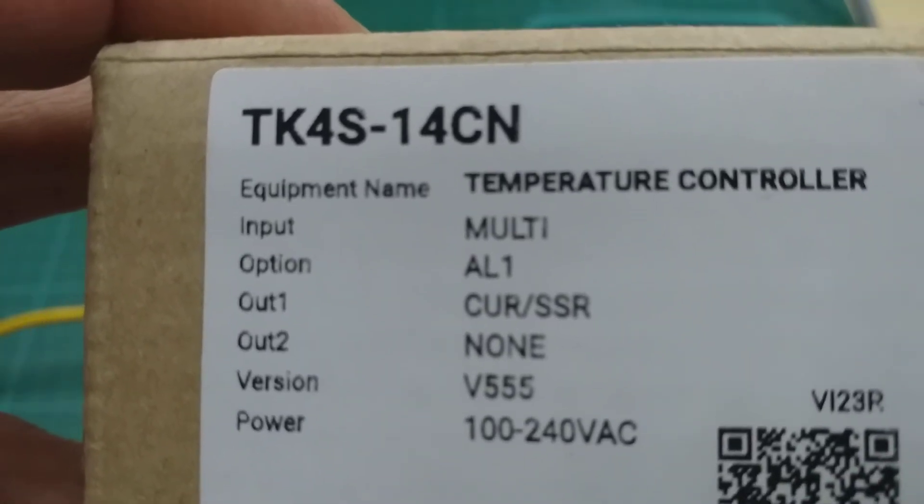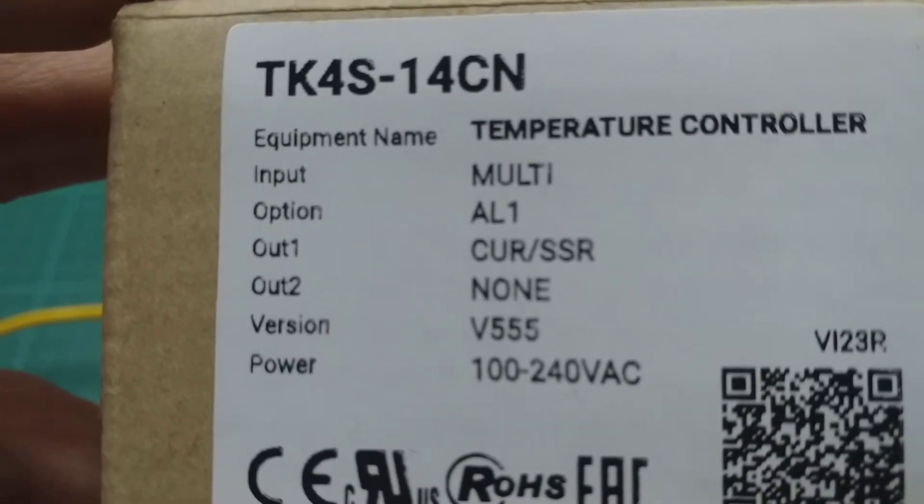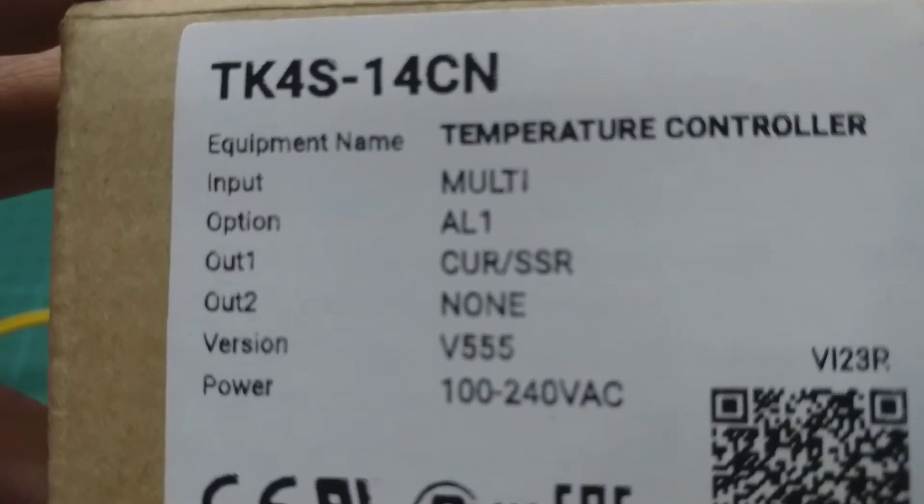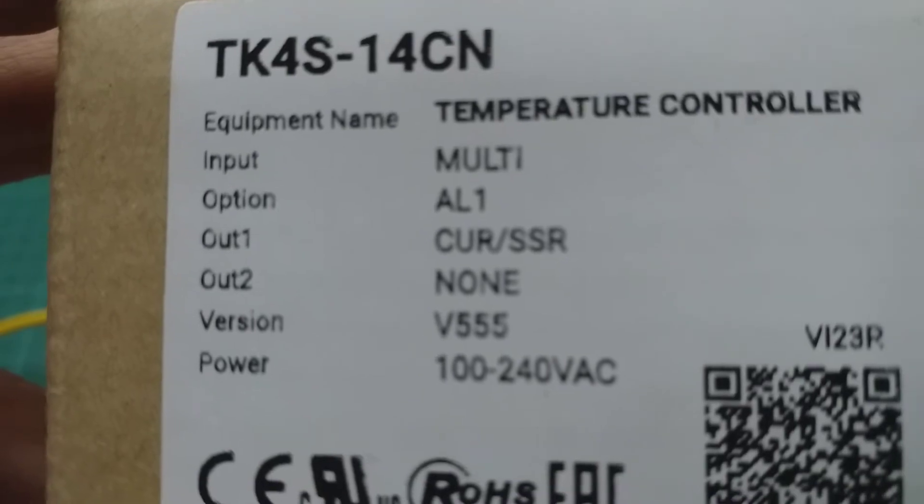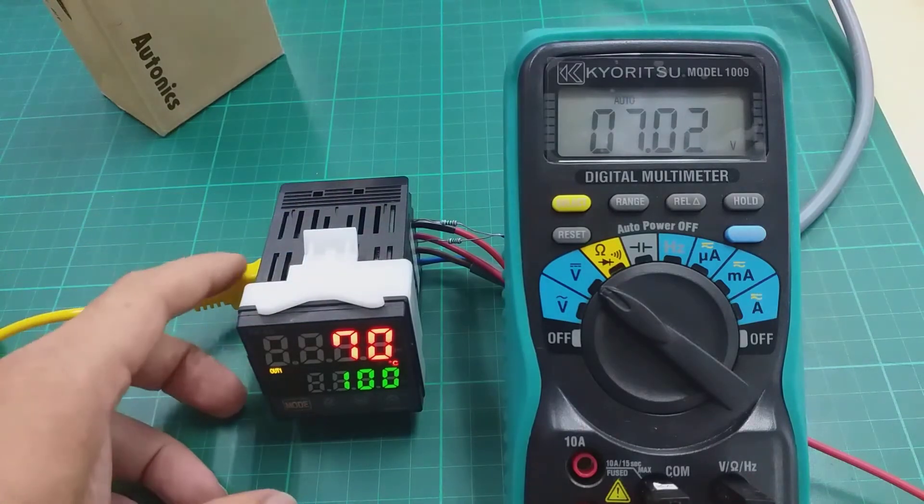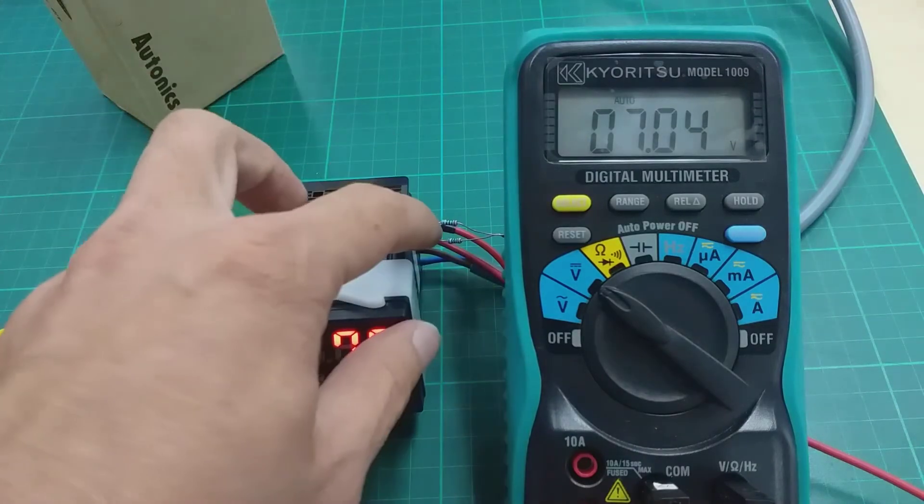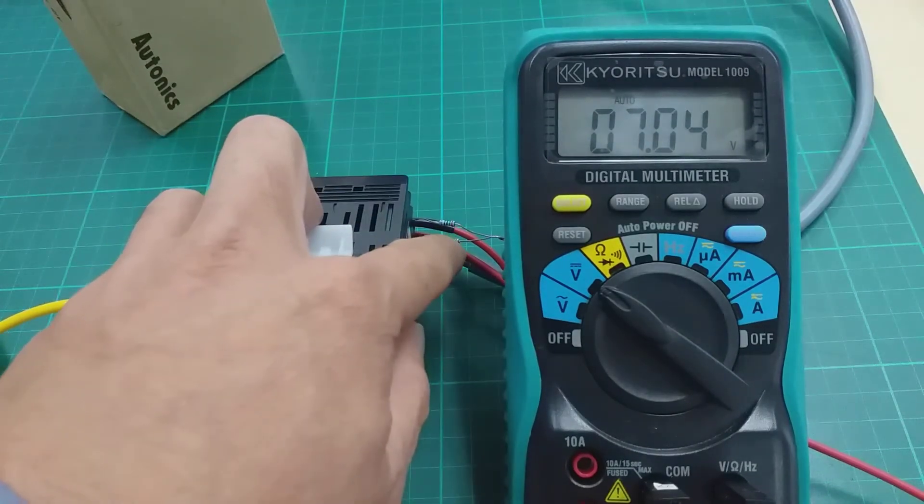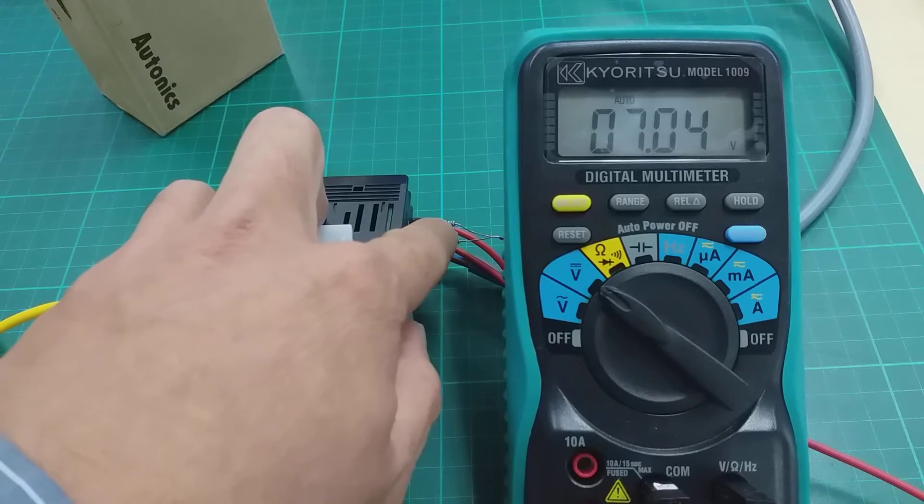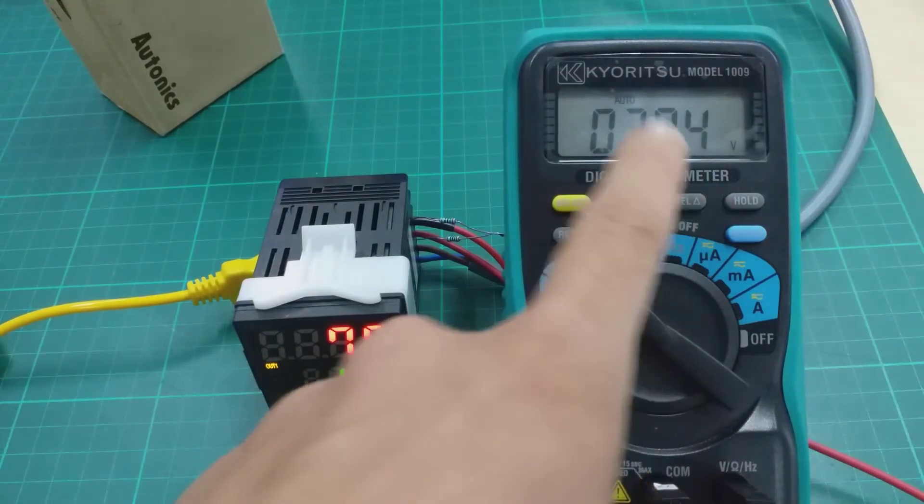Model TK4S has 14CN to measure input temperature and then output in 0 to 10 VDC. This one input, this one output, use 500 ohm series 250 times 2 in series and this one output in voltage.